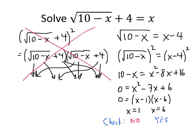Once again, just like the previous example, we end up with only one solution even though it looked like we might have two.